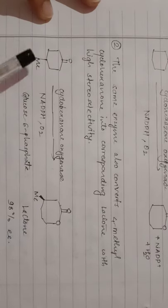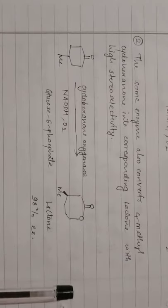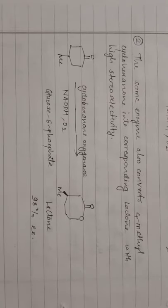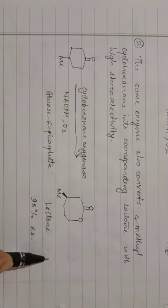Another example of ketone-to-lactone conversion: 4-methylcyclohexanone in the presence of cyclohexanone oxygenase enzyme and glucose-6-phosphate is converted to the corresponding lactone with 98% enantiomeric excess. Enantiomeric excess of 98% means: if R and S stereoisomers are both produced, 98% excess of one isomer means approximately 99% of that isomer and only 1% of the other. So we get 99% of one lactone isomer.